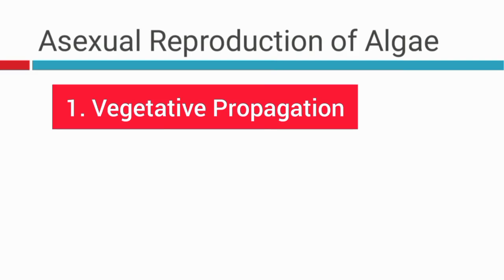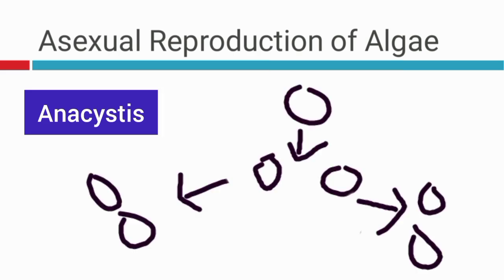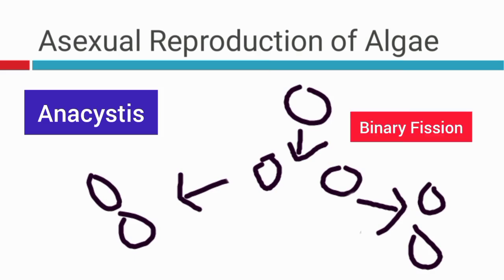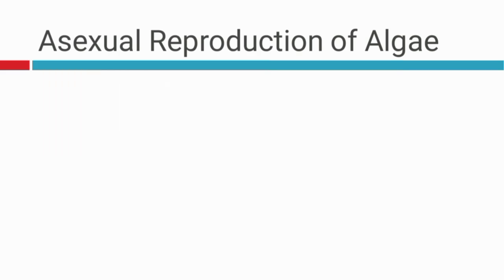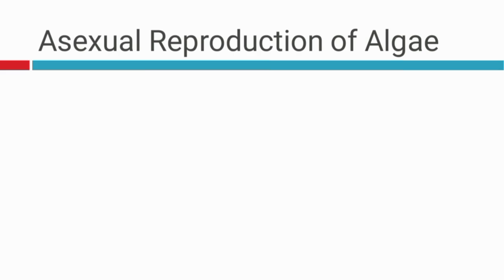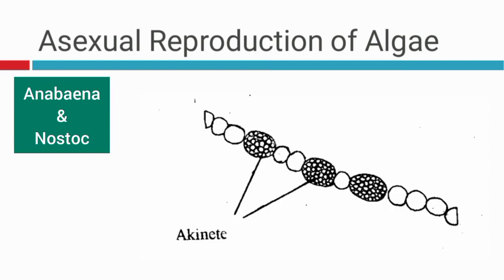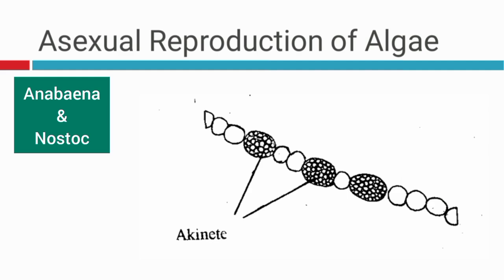For asexual reproduction, some unicellular algae — specifically cyanobacteria called Anacystis — can reproduce via binary fission. Then organisms such as Spirogyra and Ulothrix can break up to form fragments, and this kind of vegetative propagation is called fragmentation. Under asexual reproduction, algae can also reproduce via specialized cells. An example is another cyanobacteria called Anabaena, with the formation of akinetes. You can see those dark bodies in the picture.